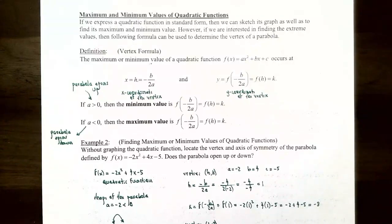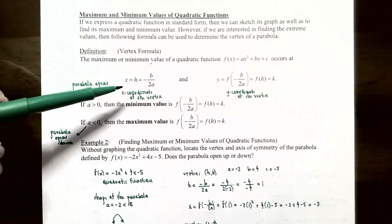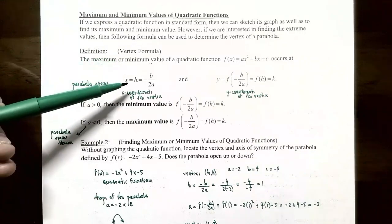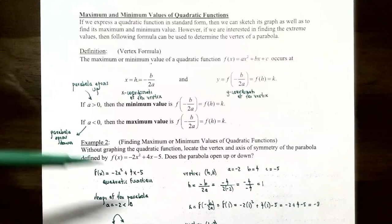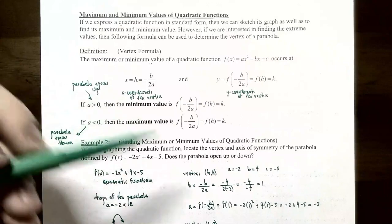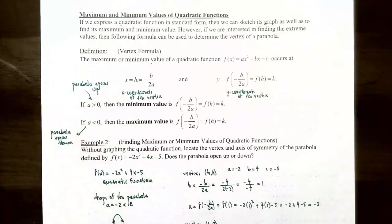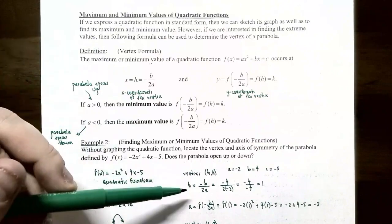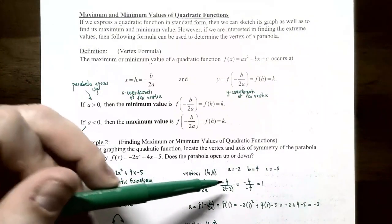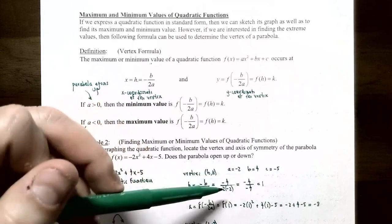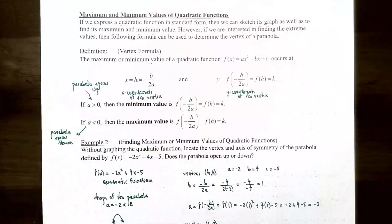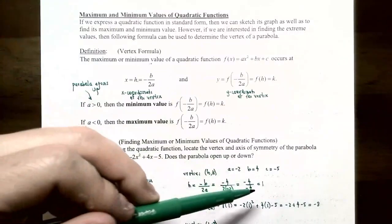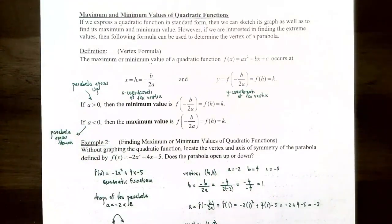We can find the vertex using the vertex formula without converting to standard form. The x-coordinate h equals negative b over 2a. Here a is -2 and b is 4, so h equals negative 4 divided by 2 times negative 2. That gives negative 4 over negative 4, which simplifies to 1. So the x-coordinate of the vertex is 1.